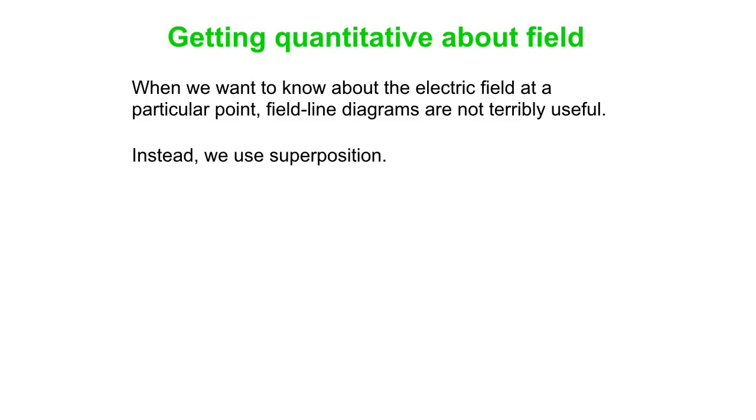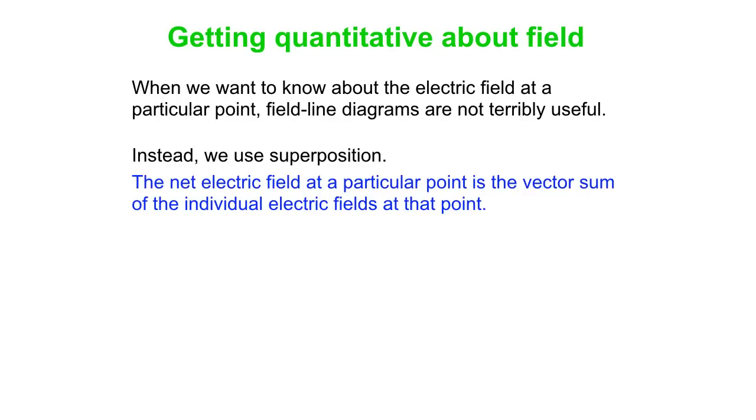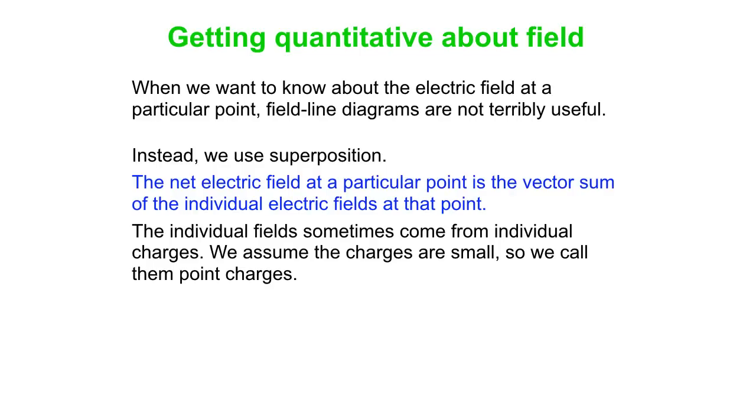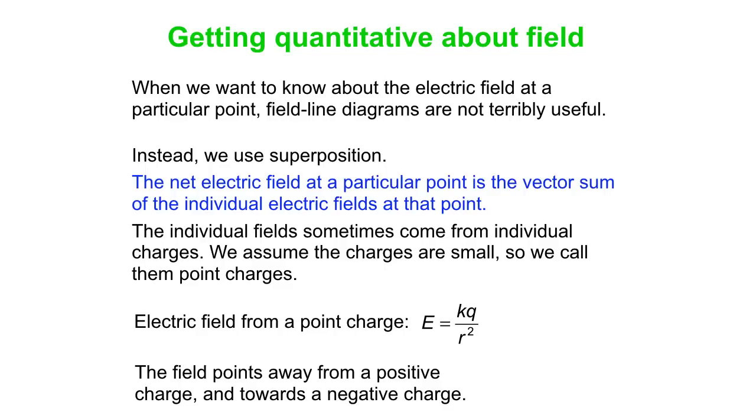If we want to be quantitative, then electric field lines or vectors are not that useful. Here we use superposition. The net electric field at a particular point is the vector sum of the individual electric fields at that point, and the individual fields come from point charges. Electric field from a point charge is KQ over R squared—that's the magnitude. Direction-wise, the field points away from a positive charge and toward a negative charge. That's it for our introduction to the electric field.